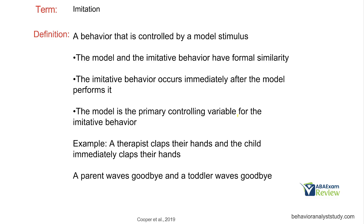Imitation is a behavior controlled by a model stimulus. The model and the imitative behavior have formal similarity — from our verbal operants, formal similarity means they look the same. So the model and the imitated behavior look the same. That's very important. Second, the imitative behavior occurs immediately. We're looking for immediacy and formal similarity in imitation.